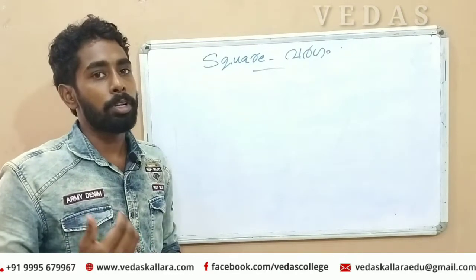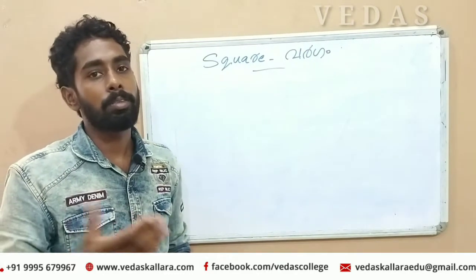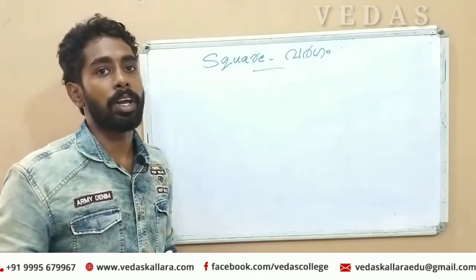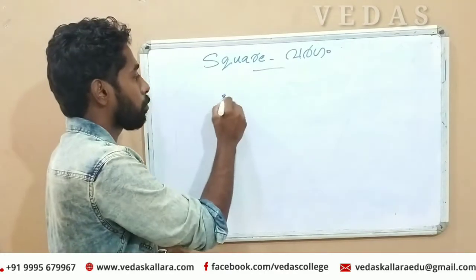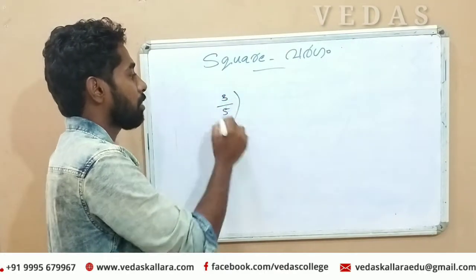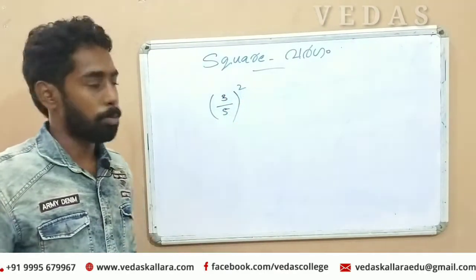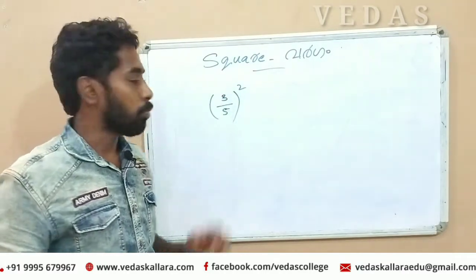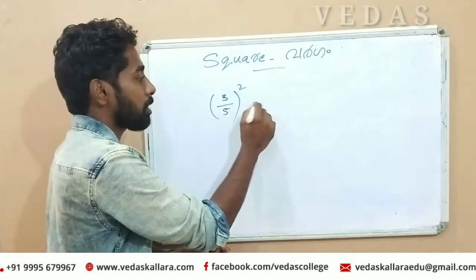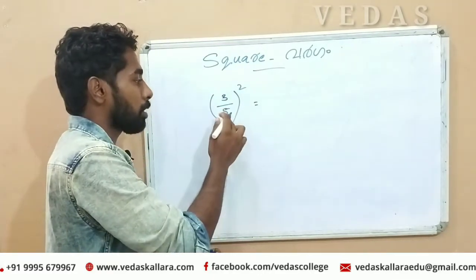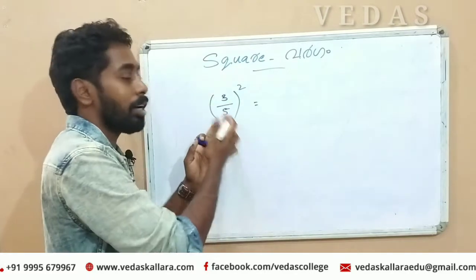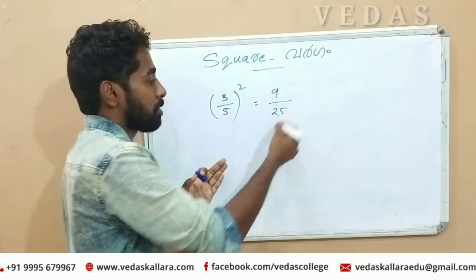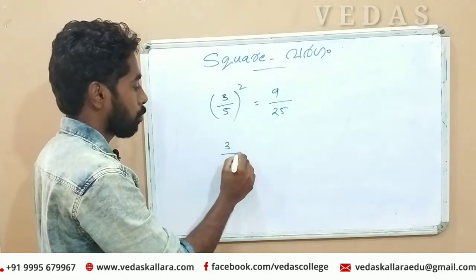If we learn 3, we will learn about finna sanghi. Now, finna sanghi is 3 by 5. We will put a bracket and put a bracket. 3 by 5. We have to put a bracket and put a bracket. 3 by 8.